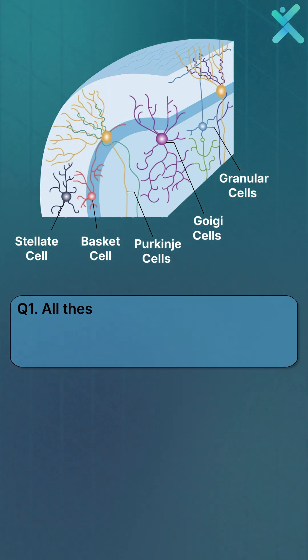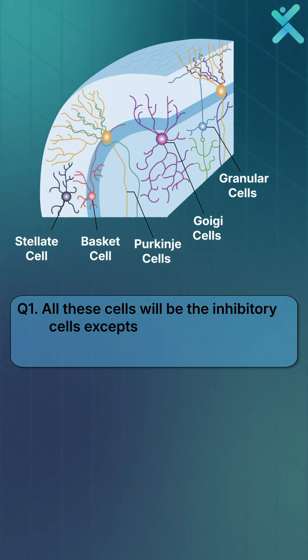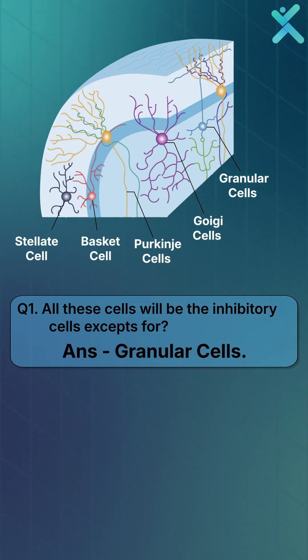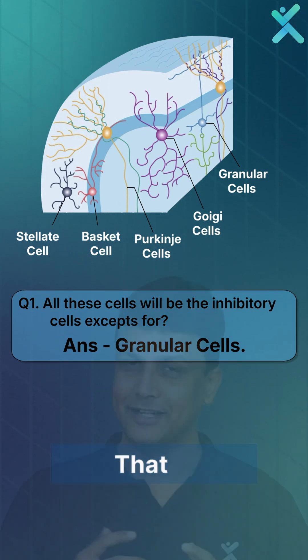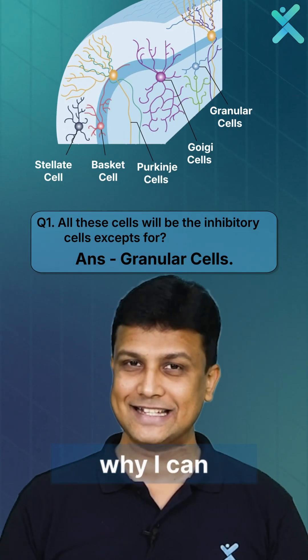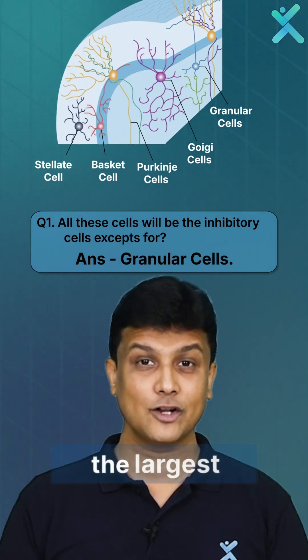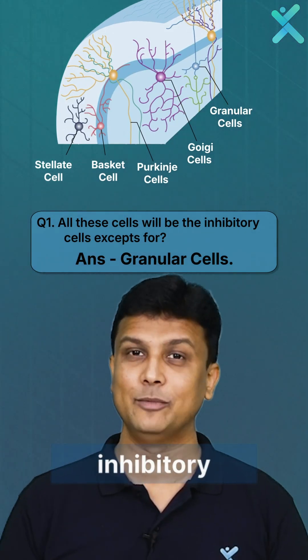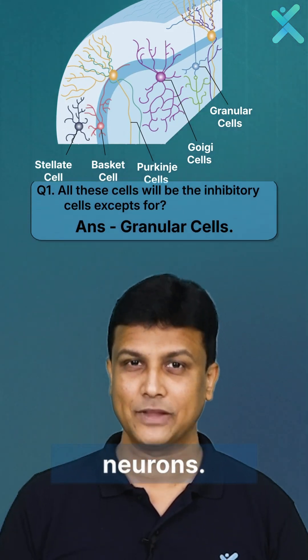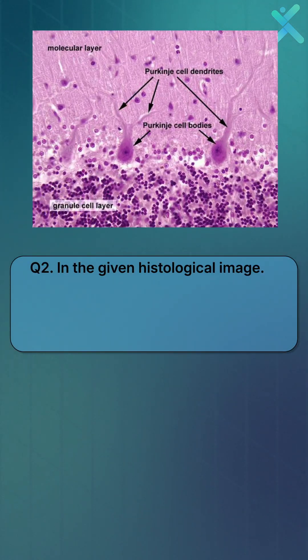Question number one: all these cells are inhibitory except for granular cells, which are excitatory. That is the reason why we can say that the cerebellar cortex is the largest collection of inhibitory neurons.